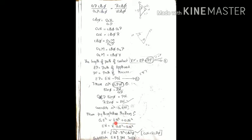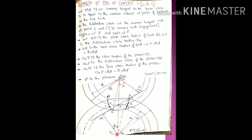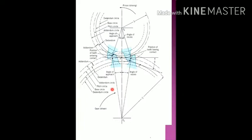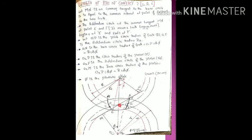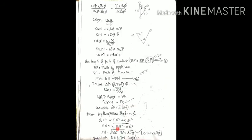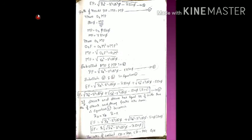Substituting: O1E is the addendum circle radius RA, and O1N = R·cos φ. Therefore EN = √(RA² − R²·cos²φ). Now substitute EN and PN values into equation two, which gives the path of approach (EP). Let this be equation number three.